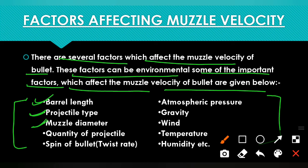Next is the quantity and quality of the projectile. This refers to the weight of the projectile, what material it is made from, its overall quantity, and its quality. All these factors also affect the muzzle velocity.